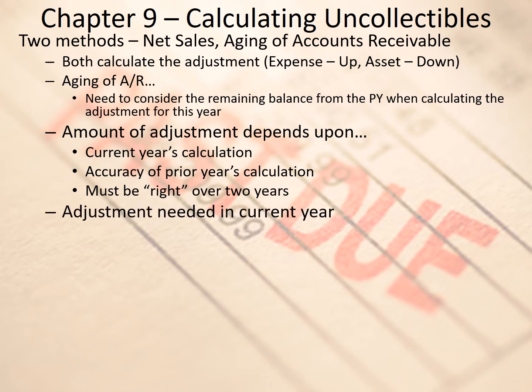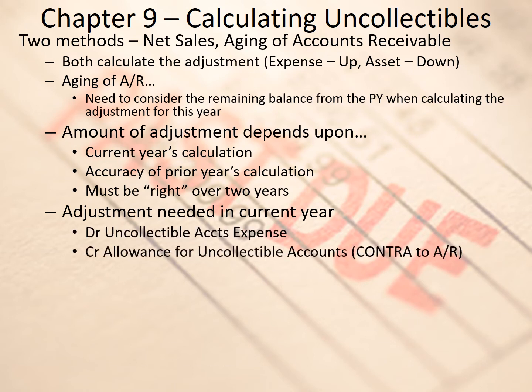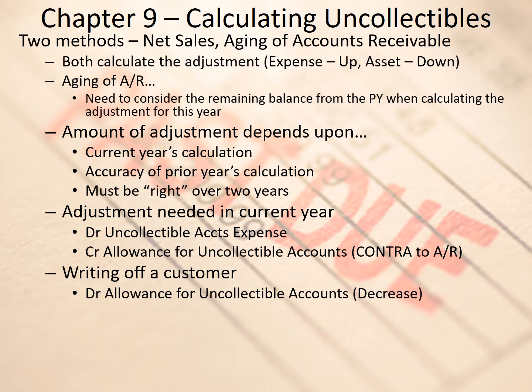The adjustment needed in the current year is your debit to uncollectible accounts expense and your credit to the allowance for uncollectible accounts, which is the contra account. When you finally get around to writing off that customer, you debit the allowance for uncollectible accounts and credit accounts receivable. You're just decreasing the contra asset and decreasing an asset, so you're not impacting your net income or your assets when you write off that customer using the allowance method.